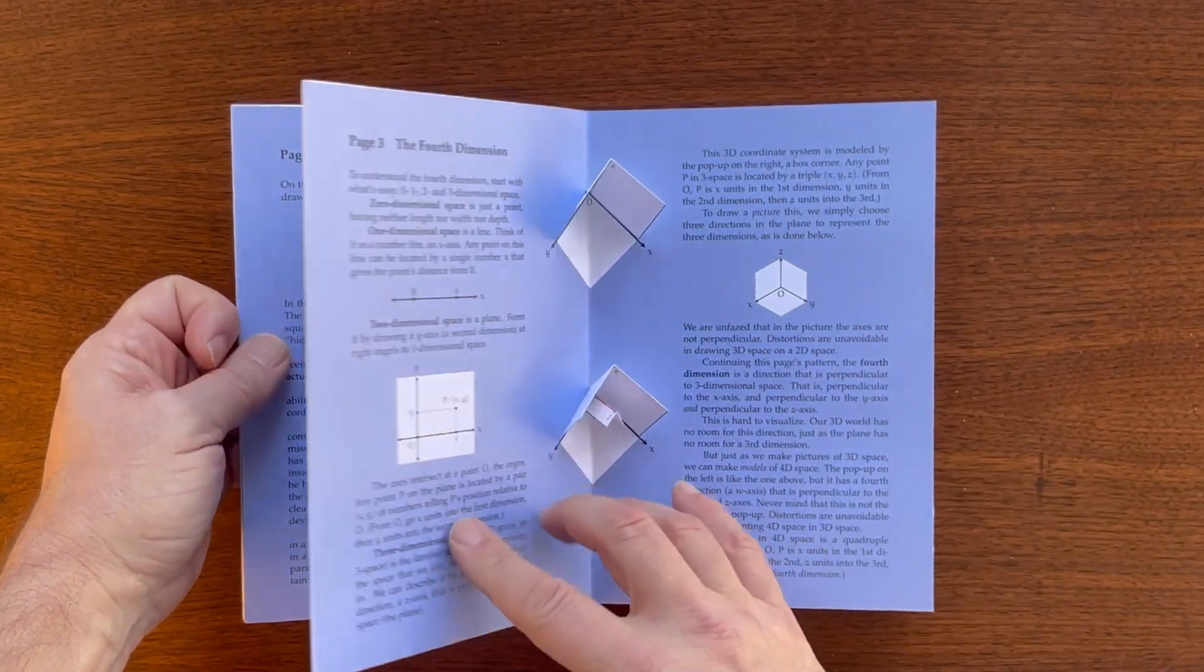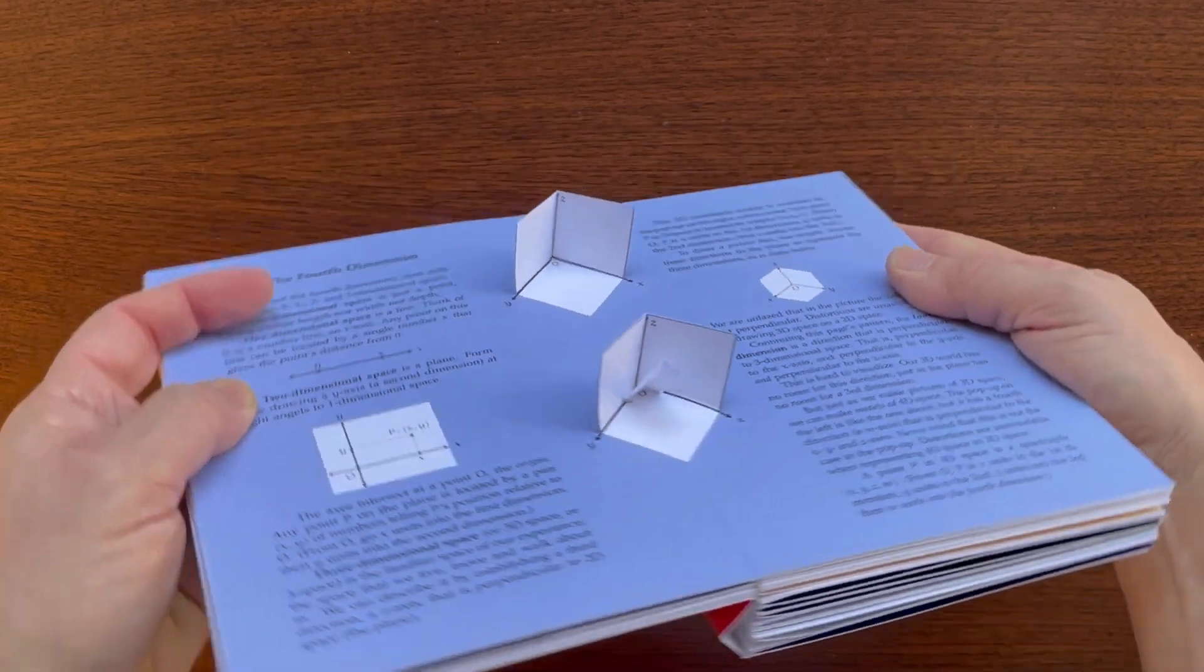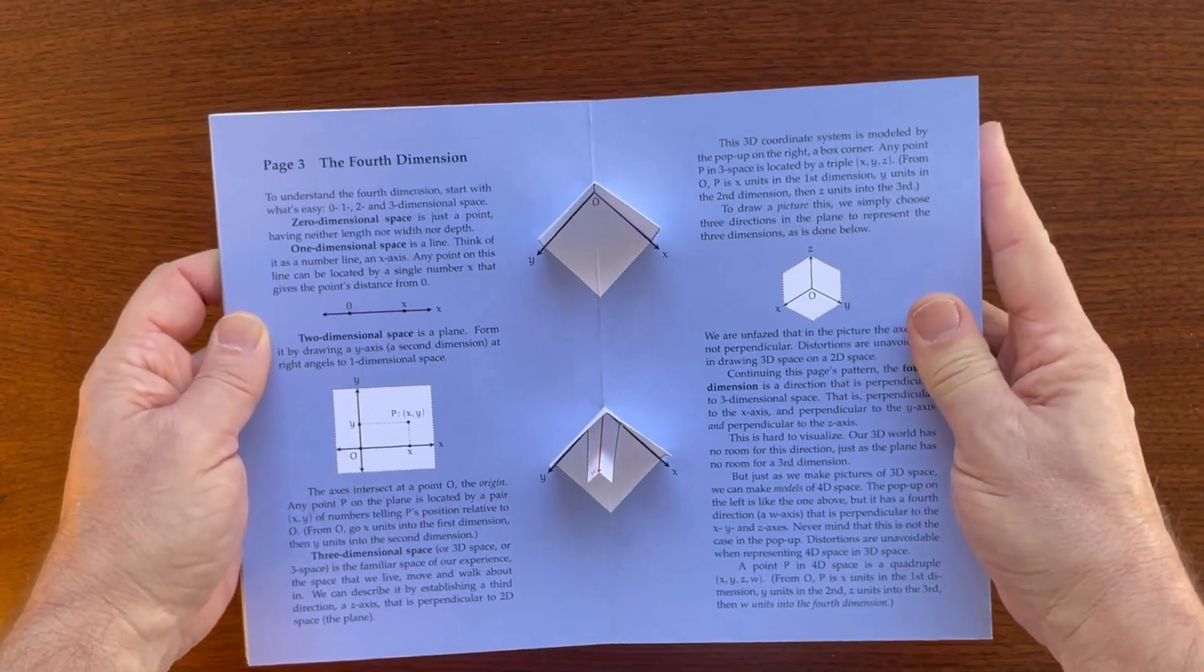On page three, four-dimensional space is defined. You'll see a three-dimensional coordinate axis at the top, and a four-dimensional axis on the bottom.